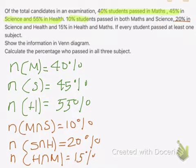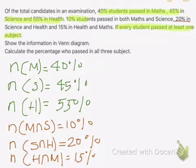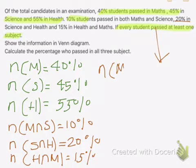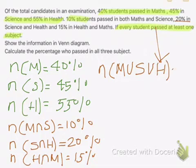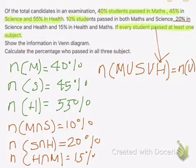This is our question. Furthermore, we've been told that every student passed at least one subject. From this, what we can conclude is that the total number of students — math union science union health — should be equal to our universal set U. This is what we'll represent in a Venn diagram, which is our first question.